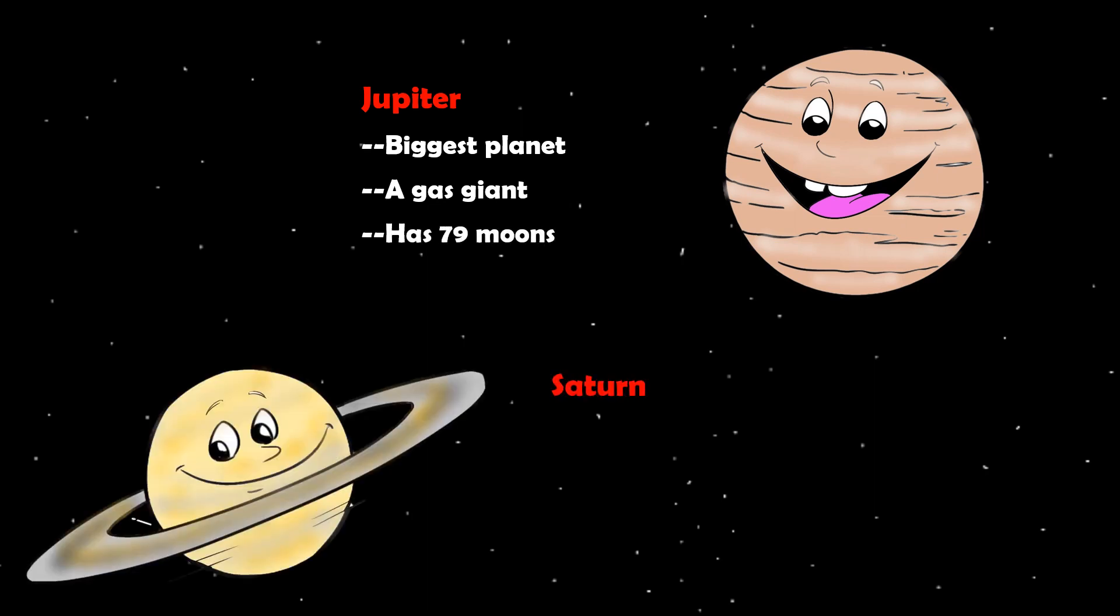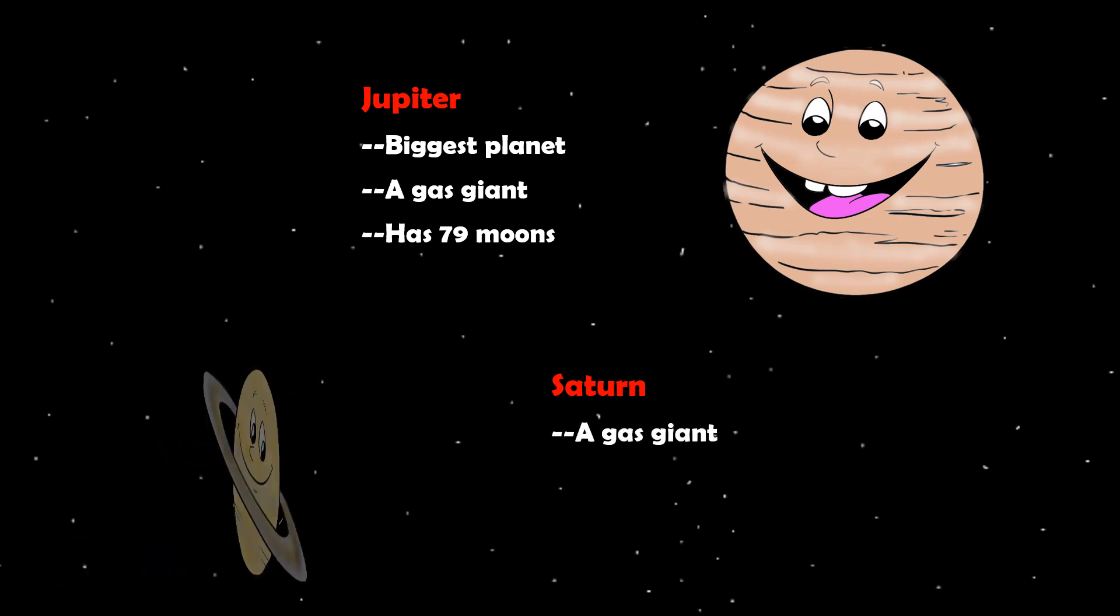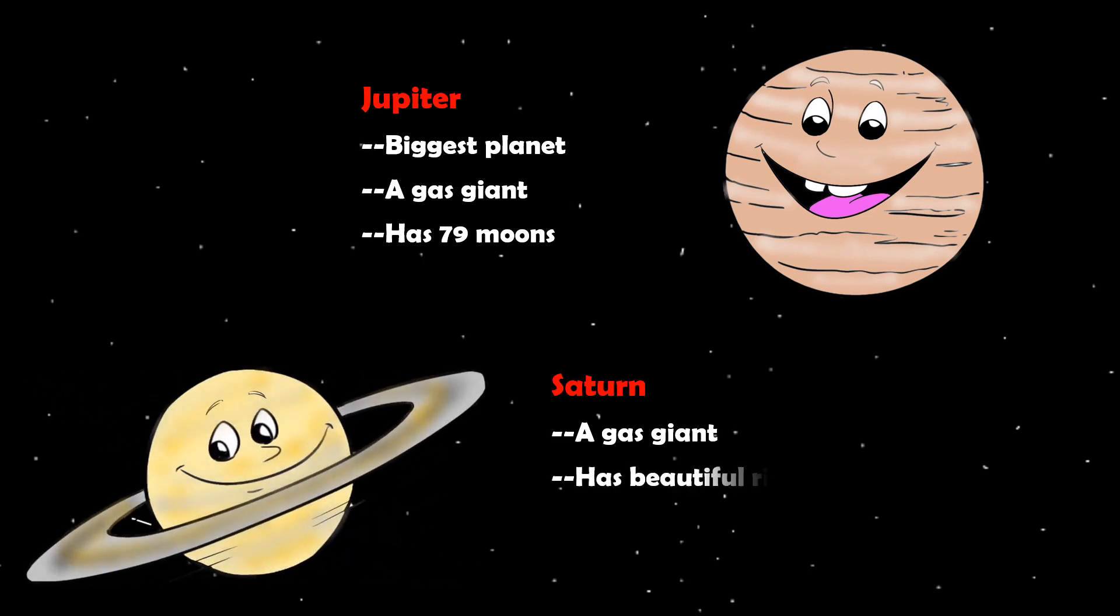Saturn is the sixth planet from the Sun. It is also a gas giant, like Jupiter. It has beautiful rings surrounding it. It has 53 moons.